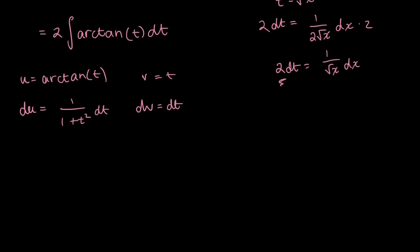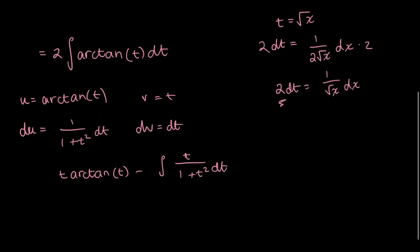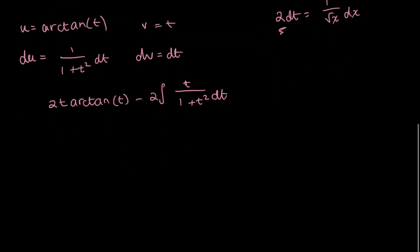And now I just plug everything into the integration by parts formula. So I have t by u, which is t arctan of t minus the integral of v du, which is t over 1 plus t squared dt. Also, I had a 2 multiplied by this whole integral, so let me not forget that. And I'll have it here.